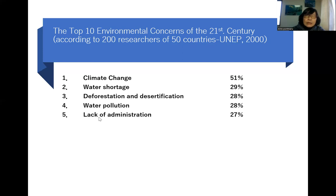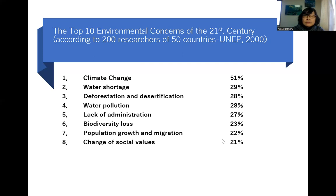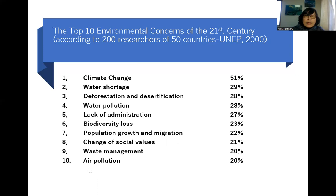That is why there are so many conflicts in the world and so many refugees. Sixth, biodiversity loss at 23%. Seventh, population growth and migration at 22%. Eighth, change of social values at 21%. Ninth, waste management at 20%. And tenth, air pollution at 20%. We will not comment on each case today, as I will cover each one in depth through the lectures.